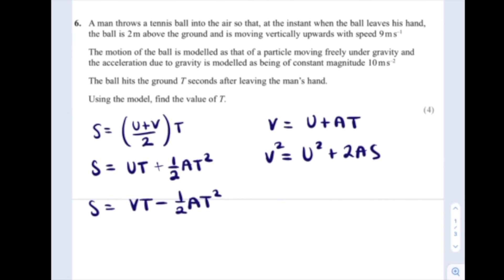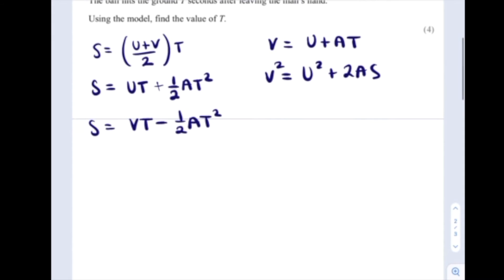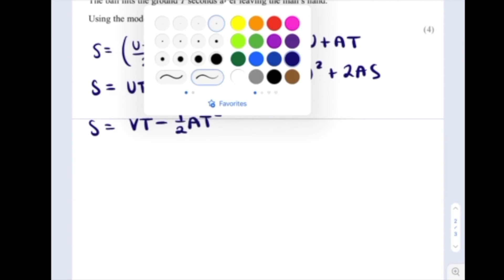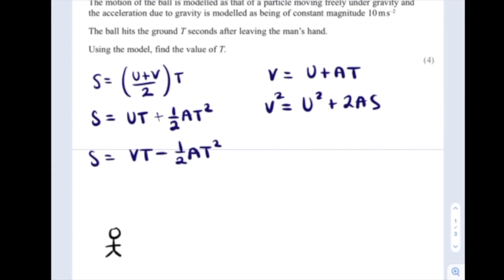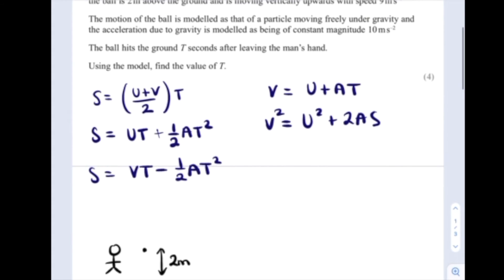I'm also going to do a picture that summarizes this information. I've got my man, he's just thrown a ball. The ball starts two meters above the ground, and then it goes up in the air to a certain point and comes back down. But it goes a further two meters in order to reach the floor again.